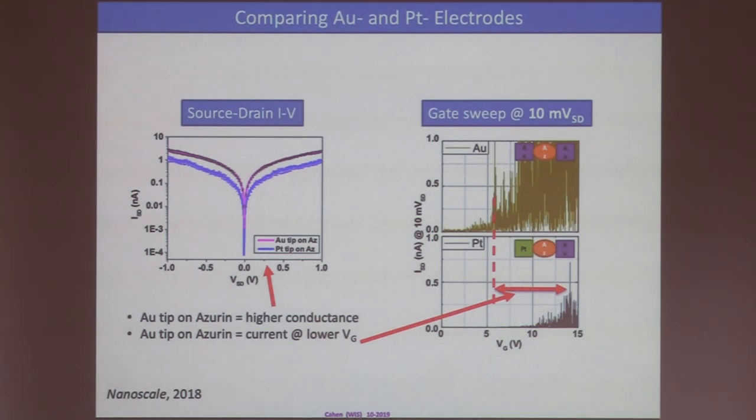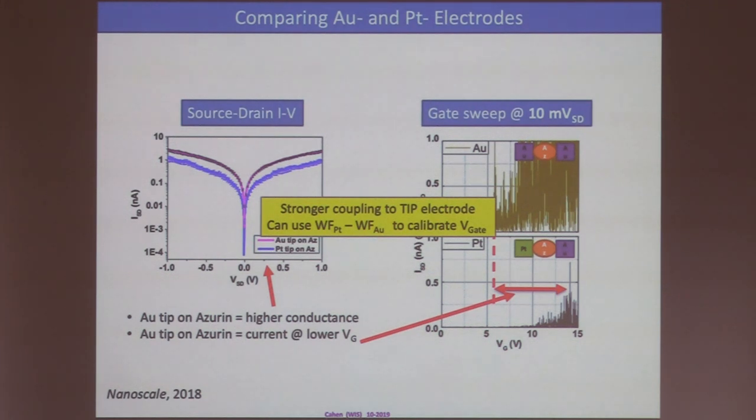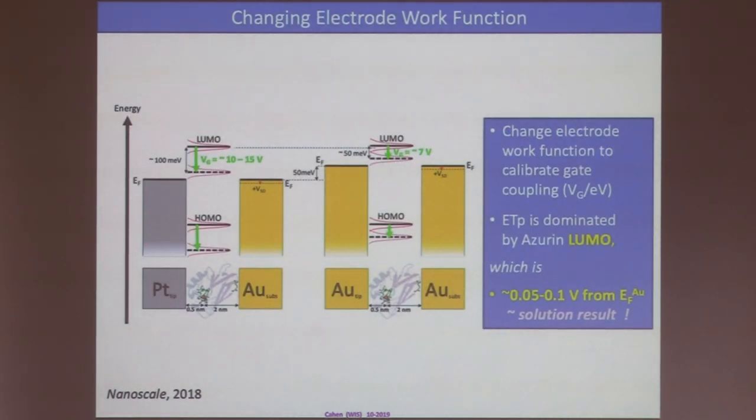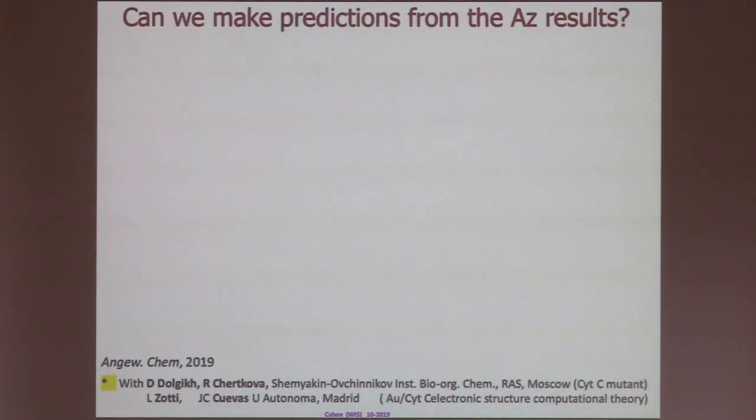So, the question here that we asked is which is the electrode that governs things. That was essentially why we changed the tip, which was the easier part. And we went to tip with gold instead of platinum. And we see that the current starts at much lower gating voltages. And also the currents with the gold are a bit higher than with the platinum tip. So, this can be explained by looking at the difference in work functions of the gold and the platinum, which we can measure. And then that allows us to do some calibration of the gate voltage. We find that the electron transfer is dominated by the LUMO. And it's about 50 to 100 millivolts from the Fermi level of the gold, which is very similar to the solution result, rather than the 500 to 1000 millivolts. So, you can also get the energetics.